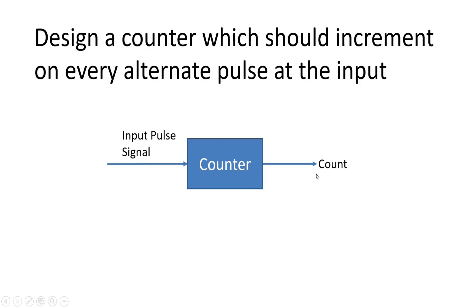This count should increment by one whenever an alternate pulse is detected. For example, on the first pulse this counter will increment its value by one, but on the second pulse it should not increment. On the third pulse again it should increment and on the fourth pulse it should not increment and so on.